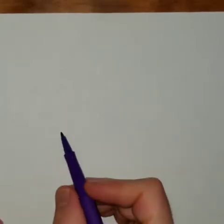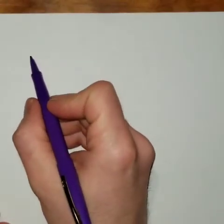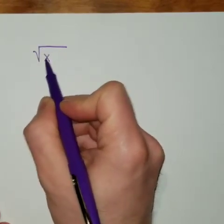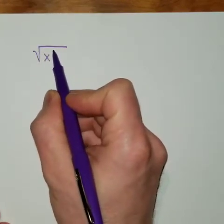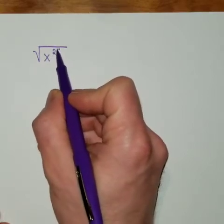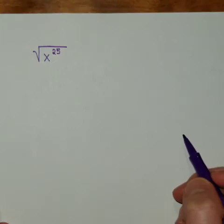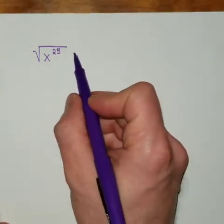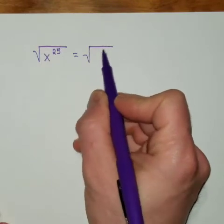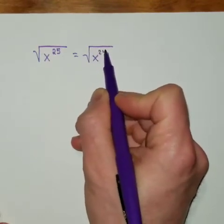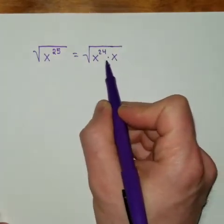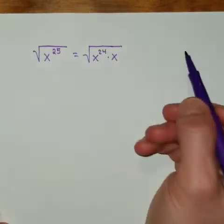Alright, so if I were to do a square root of x to the 25th power, that's a big one. Well, again, you've got to make it even. So square root of x to the 24th times x, right, you pull one x off, make it an even number.